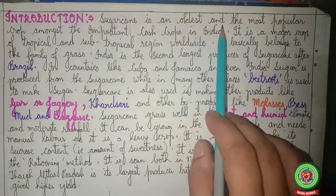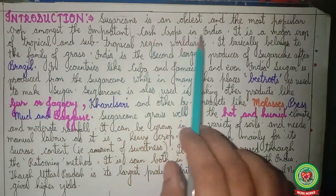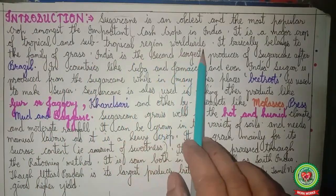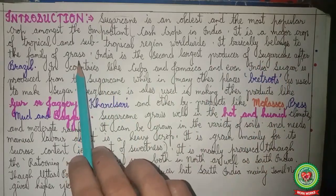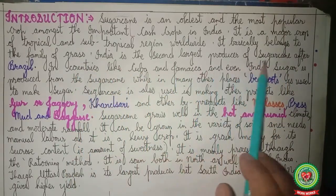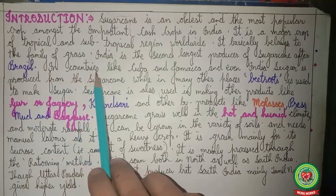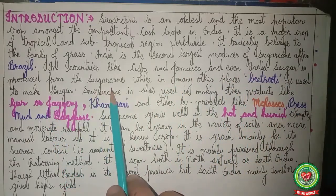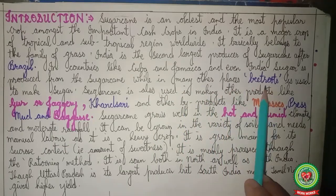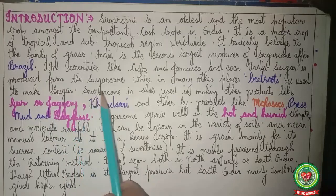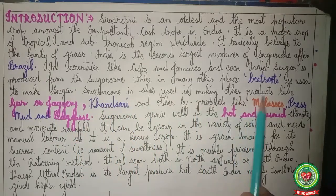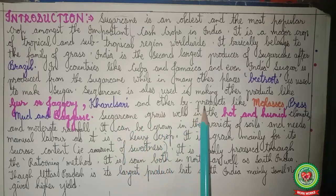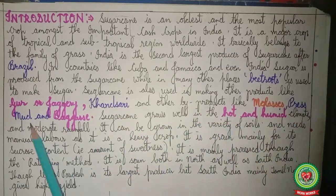Sugarcane is the oldest and most popular crop among the important cash crops in India. It is a major crop of tropical and subtropical regions worldwide and basically belongs to the family of grass. India is the second largest producer of sugarcane after Brazil. In countries like Cuba, Jamaica and India, sugar is produced from sugarcane, while in many other places beet root is used to make sugar. Sugarcane is also used to make gur or jaggery, khansari (the shakkar eaten in winters), and other by-products like molasses, pressmud and bagasse.